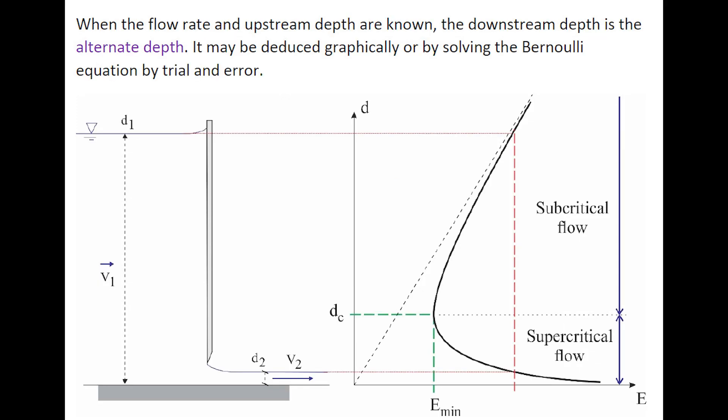When the flow rate and upstream depth are known, the downstream depth is the alternate depth, which may be deduced graphically, or by solving the Bernoulli equation by trial and error.